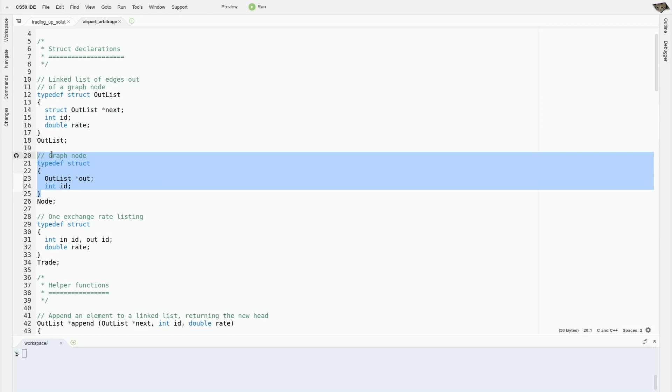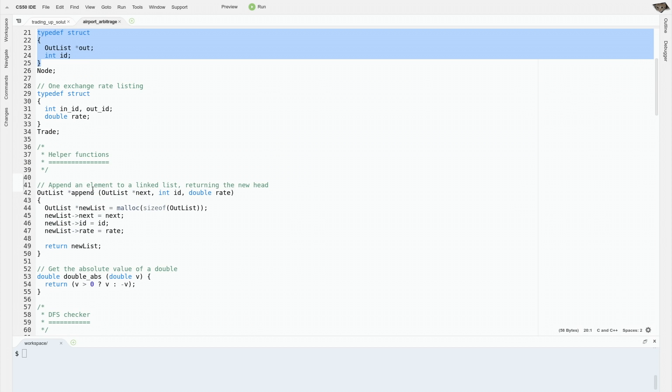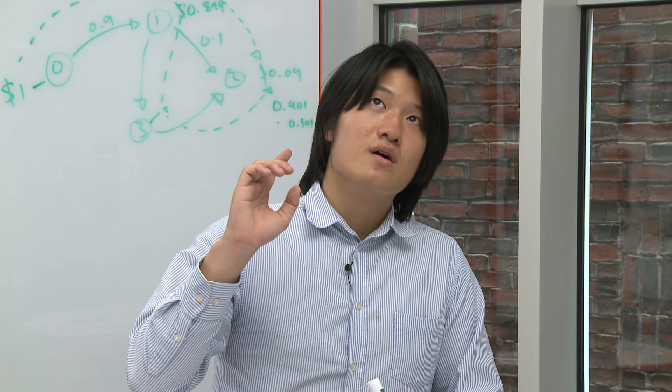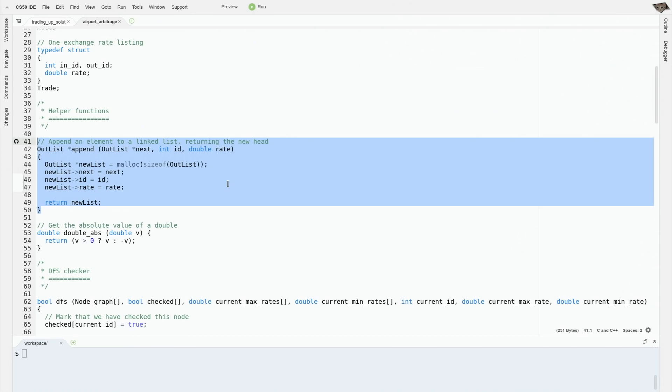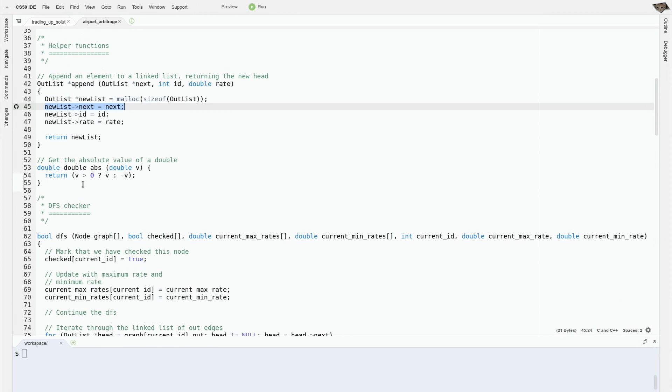We'll also have a structure in which we store the records that we read in at input so that they're easy to deal with. Appending something to a linked list is something that we'll want to do often, so we'll have a helper function for it. All we'll do is allocate a new element to the list and then point to the previous one with it. And then we'll need to find the absolute value of a difference to determine if the same edge is off by more than our tolerance rate.